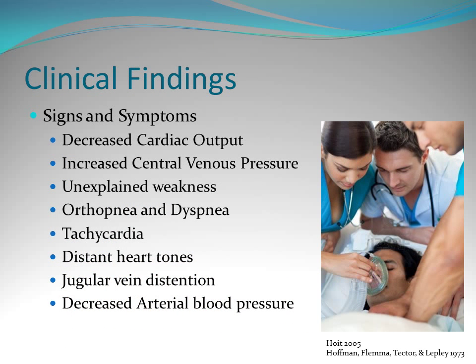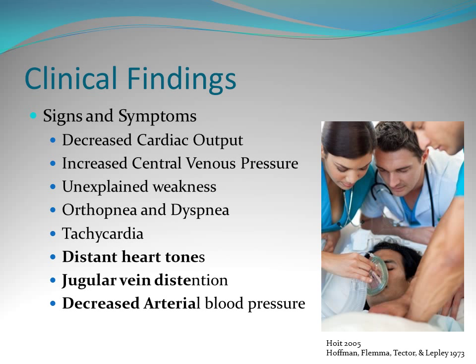What you'd see in your patient: they would have decreased cardiac output, increased central venous pressure. It looks like they have plenty of volume, but it's actually a false reading because there's pressure pushing down on the right side of the heart. So they're going to be tachycardic, have distant heart sounds, jugular venous distension — you sit them up and see their neck veins popping out — and decreased blood pressure.